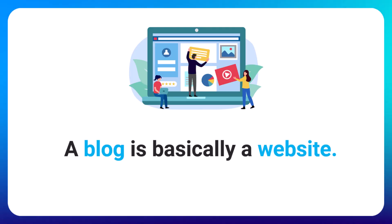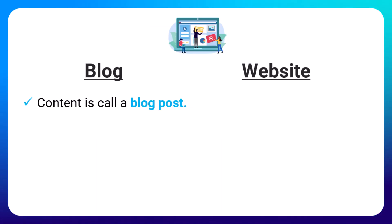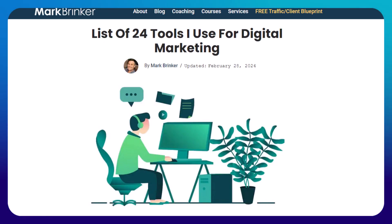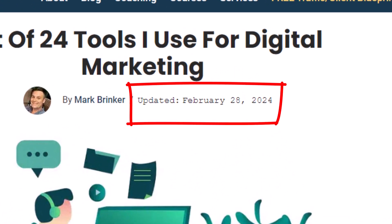A blog is basically a website. Then you might ask, what's the difference between a blog and a website? Not a whole lot. It mainly boils down to the nature of your content and how it's structured. For example, when you publish content on a blog, it's called a blog post, and blog posts are published in chronological order with a time and date stamp, like journal entries in a diary.